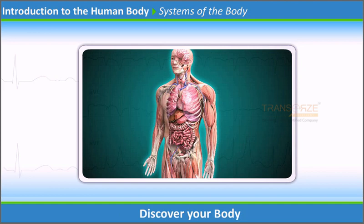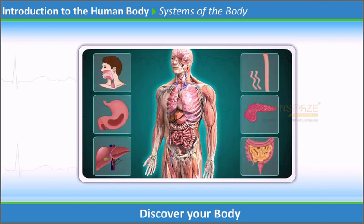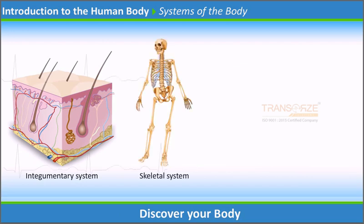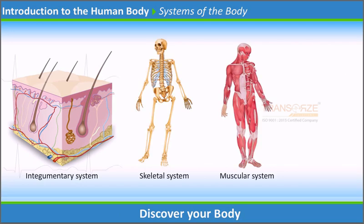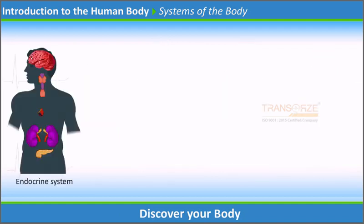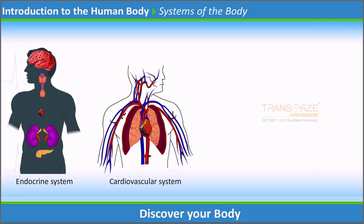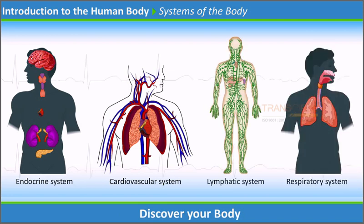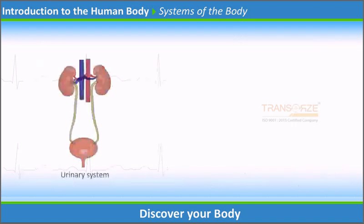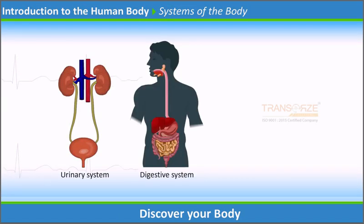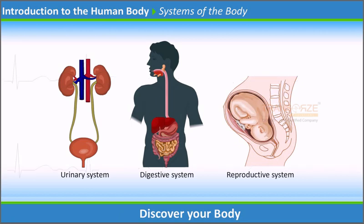A body system is a union of varying numbers and kinds of organs arranged together so that they can perform complex functions for the body. The major systems of our body are: integumentary, skeletal, muscular, nervous, endocrine, cardiovascular, lymphatic, respiratory, urinary, digestive, and reproductive systems. Let us discuss these in the coming modules.